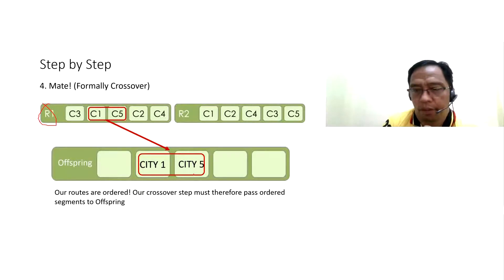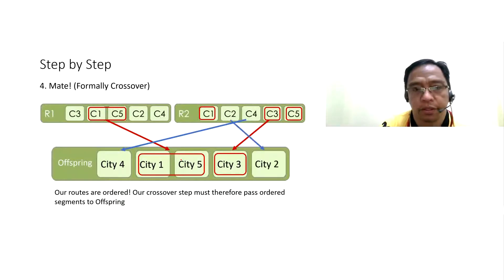And then, from the second parent, R2. Here, we start with CT3. Index from the end of the segment. CT5 is already here. CT1 is already here. So, C4 and then the other one is C2. So, we already have our first offspring of our algorithm.